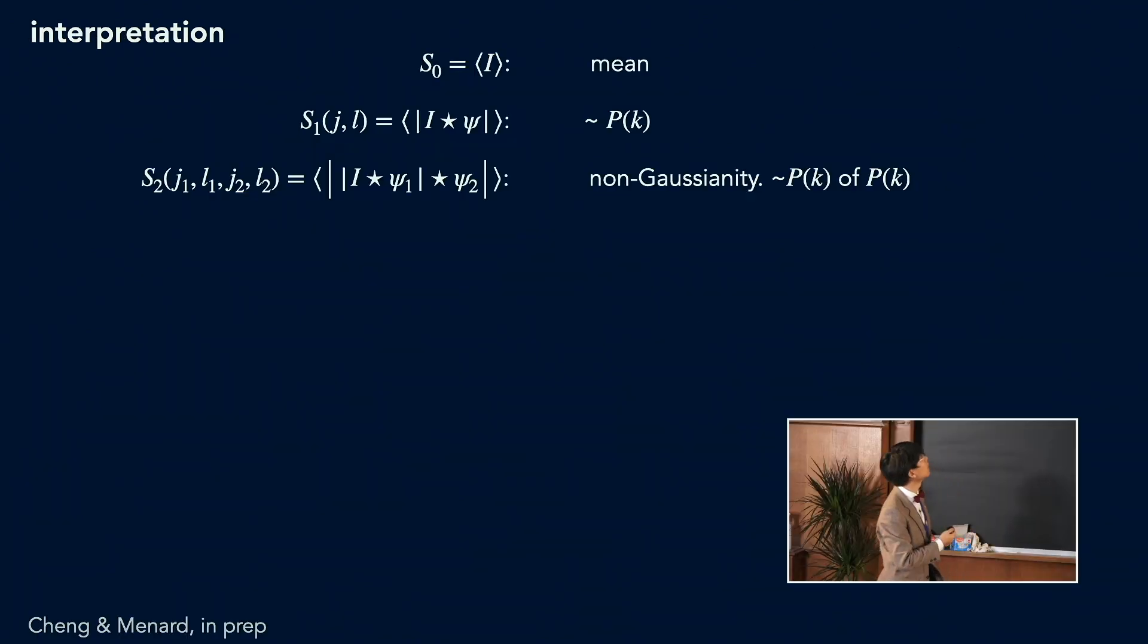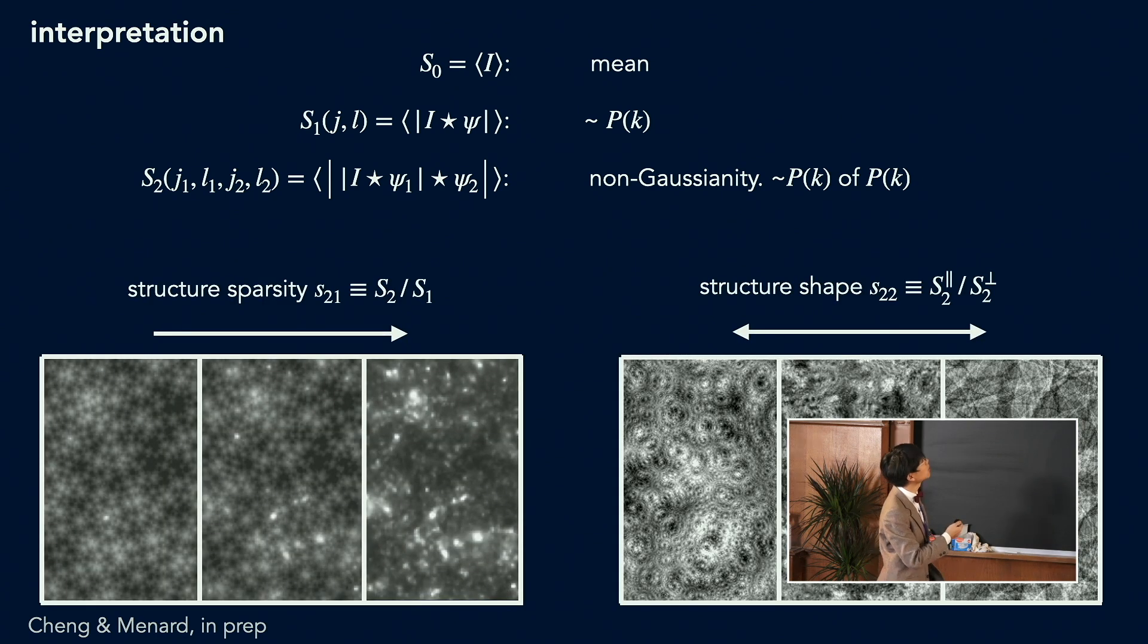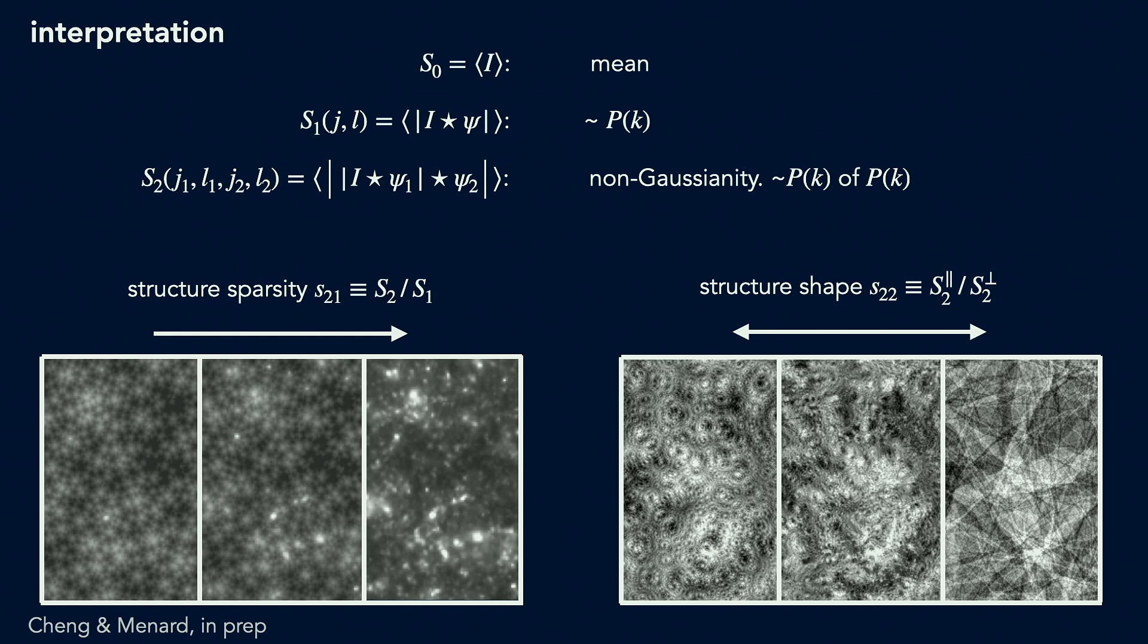Right. So I will briefly talk about some interesting interpretations. We found that basically the first order scattering is similar to power spectrum and the second order can be interpreted as something like the power spectrum of local power spectrum. But the difference is that now you have the first order non-linearity which makes it much more stable. And also I found some interesting visual interpretations of these coefficients. For example, the second order can be interpreted as the spatial sparsity of features, as you can see.